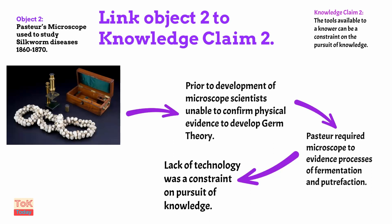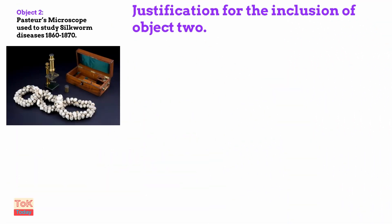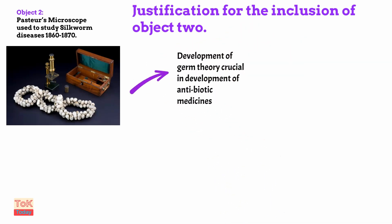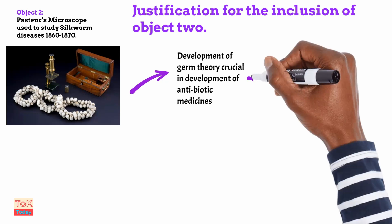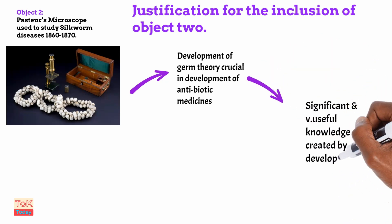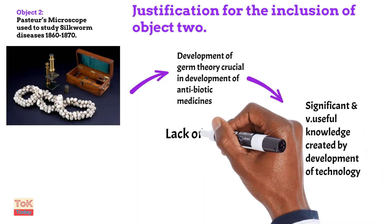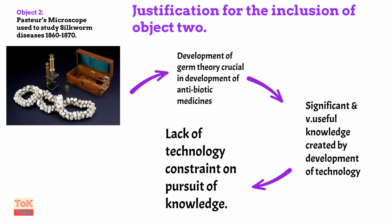There are a lot more details on this in the commentary at TOKtoday.com. Justifying the inclusion of object two: germ theory was crucial in the development of antibiotic medicines — a particularly significant area of knowledge development for technology and medicine — and it was only enabled by technology. This shows that a lack of technology can be a constraint on the development of important and significant knowledge.